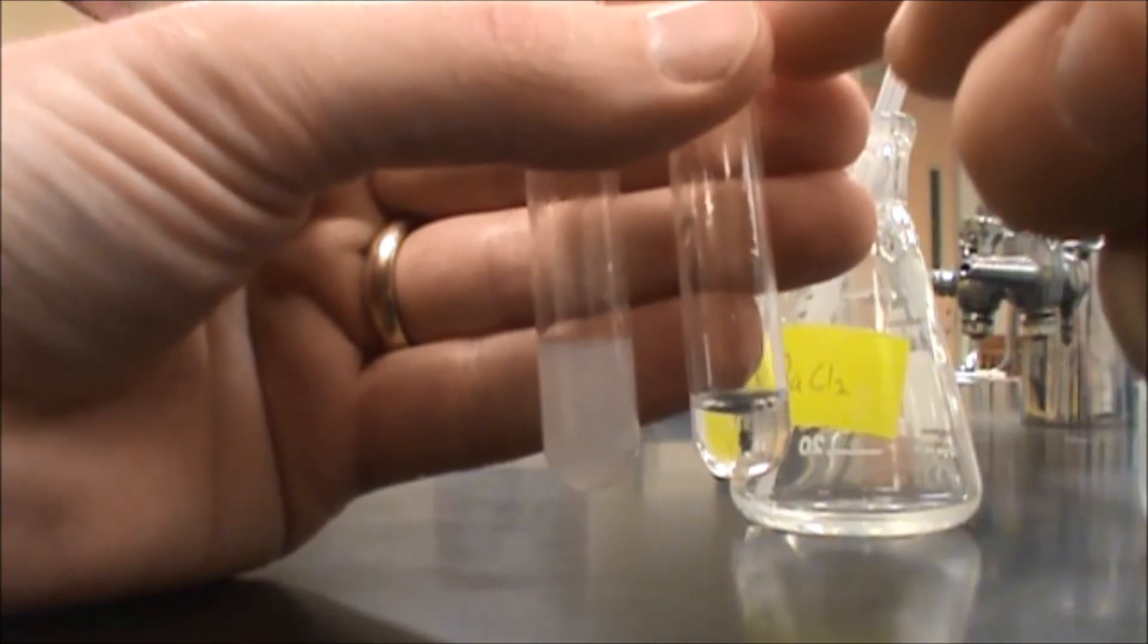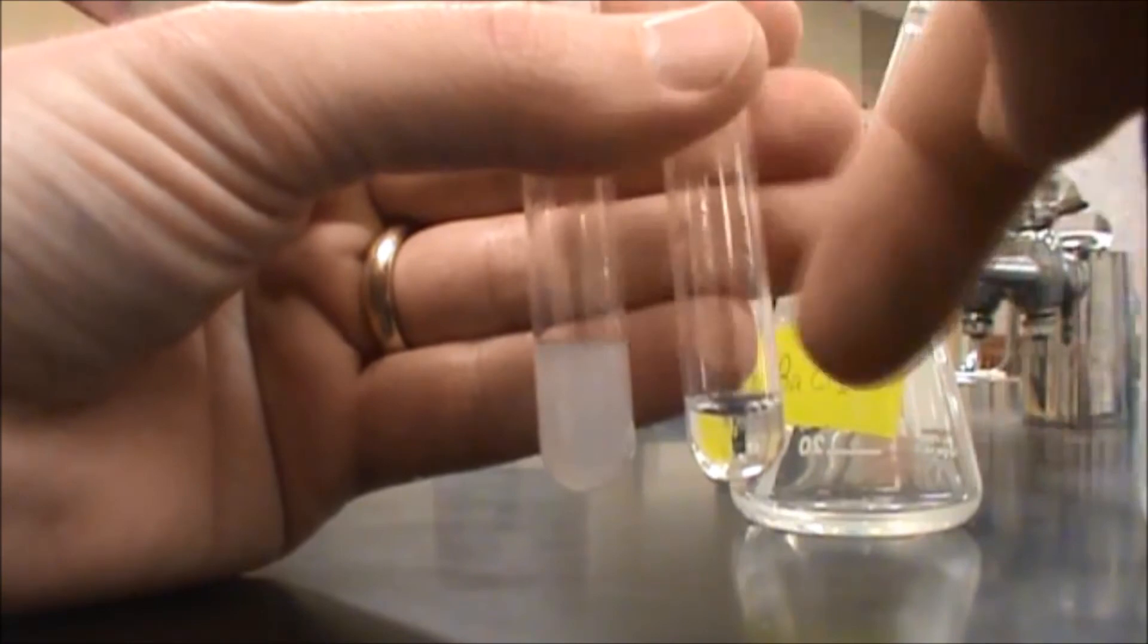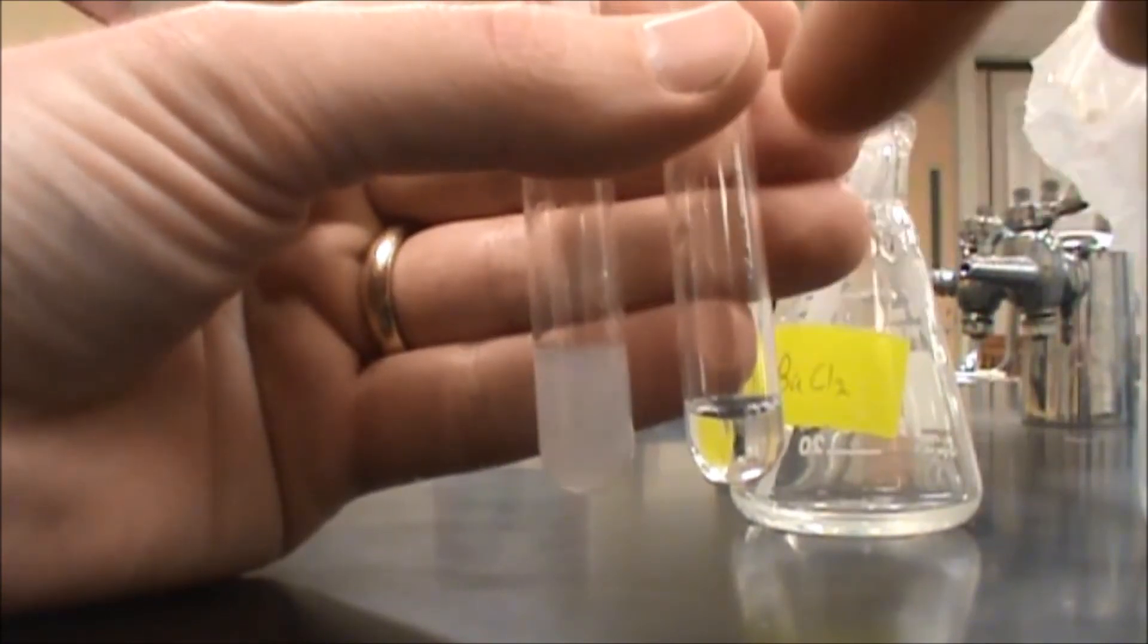So here we can see that my unknown does not contain a sulfate. It matched the first part of the test, both formed a precipitate. But the second part, with adding the acid,